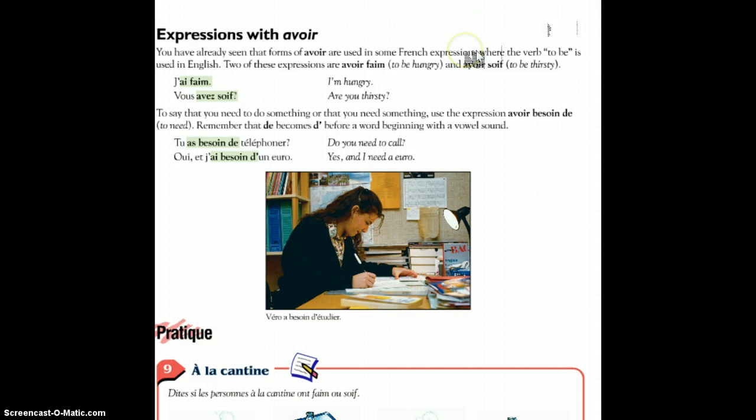Now, you have already seen the forms of avoir used in some French expressions where the verb to be is used in English. For example, in English we say I am hungry, but the French do not say that. The French say I have hunger. The French express hunger and thirst with avoir. Avoir faim, avoir soif. Here are two examples. J'ai faim, I am hungry. Vous avez soif, you are thirsty.